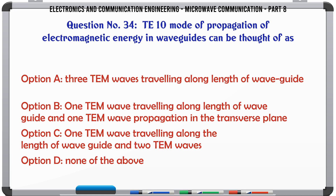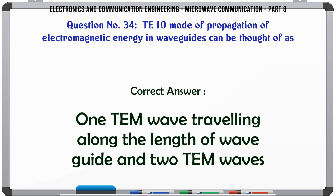A waveguide supports one TEM wave traveling along the length of the waveguide and two TEM waves propagating in the transverse plane. The correct answer is: 1 TEM wave traveling along the length of waveguide and two TEM waves.